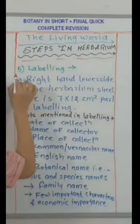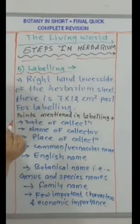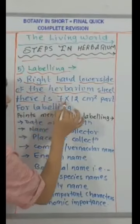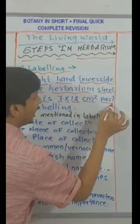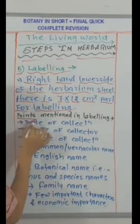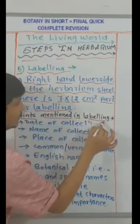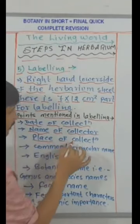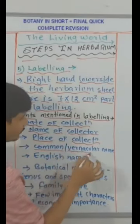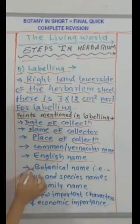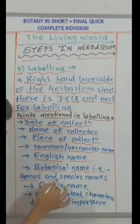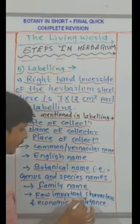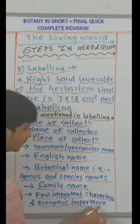Number 5: Labeling. On the right-hand lower side of the herbarium sheet, there is a 7 × 12 cm area for labeling. Points mentioned in labeling include: date of collection, name of collector, place of collection, common or vernacular name, English name, botanical name (genus and species), family name, a few important characters, and economic importance.